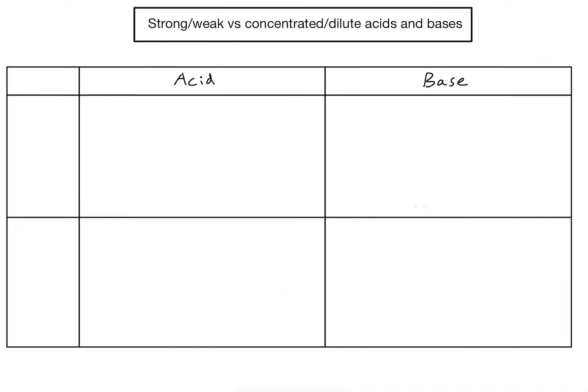We've got acids and bases as the second and third columns. Let's start off by looking at what the word 'strong' means when we're talking about a solution of an acid or a base. The key terminology here is that a strong acid or strong base will ionise fully when dissolved in water. You might also hear the word 'dissociate' — these two terms can both be used to describe the same thing.